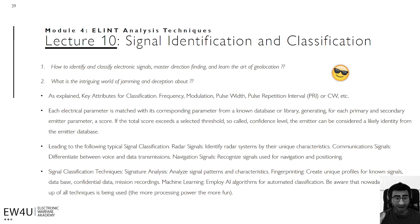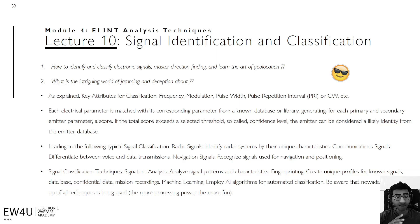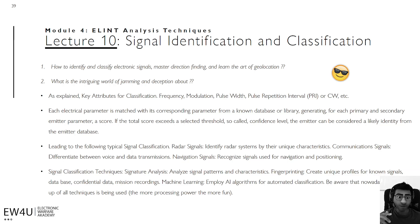If the total score exceeds a selected threshold — the so-called confidence level — the emitter can be considered a likely identified emitter from our database. Signals are grouped into families: radar signals identified by unique characteristics, communication signals differentiated between voice and data transmission, and navigation signals used for positioning.